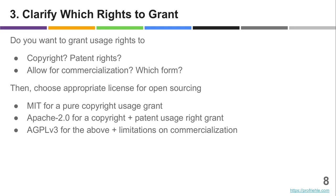Do you want to limit how the code gets commercialized by other parties? If you want to limit that, yet another set of licenses comes into play. Simplifying: you can use the MIT license for a pure copyright grant, the Apache license if you also need to grant patent rights, and if you want to limit other people from commercializing it, the AGPL version 3 license is a good choice.